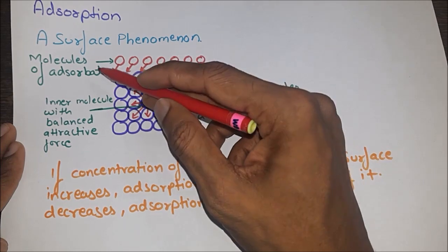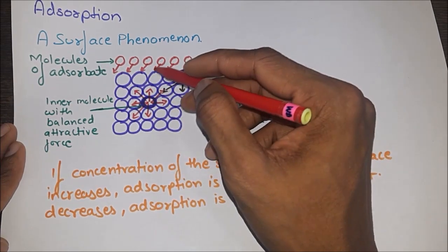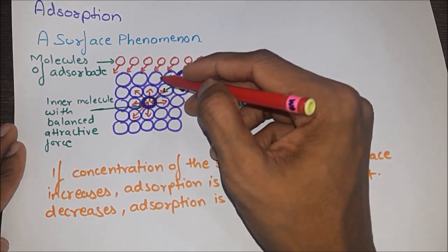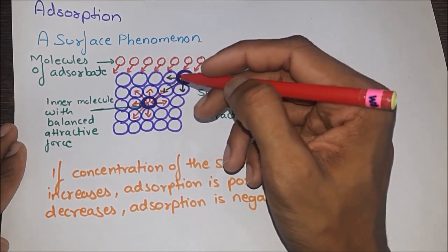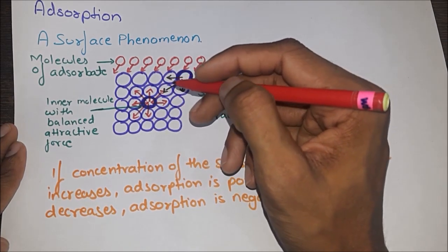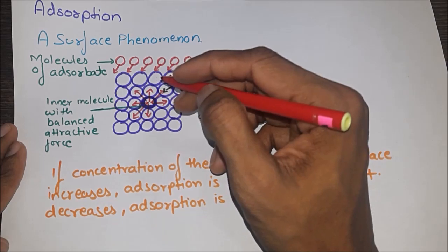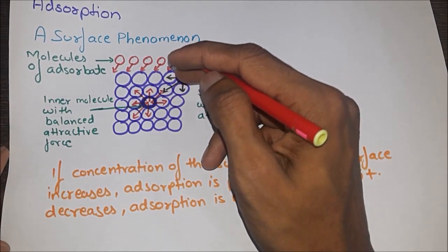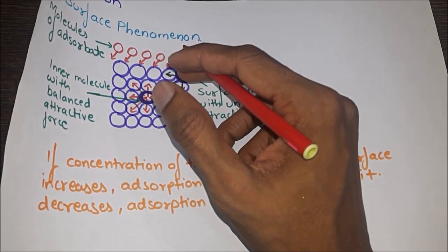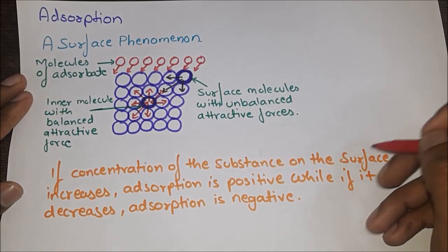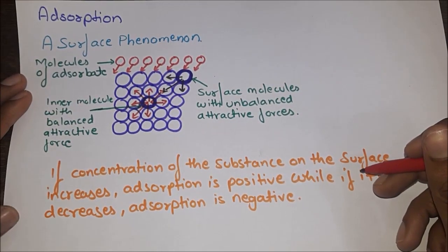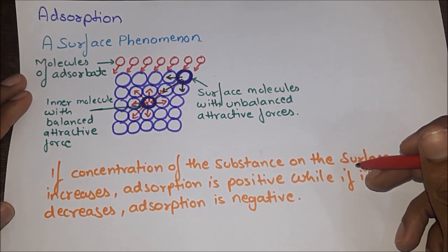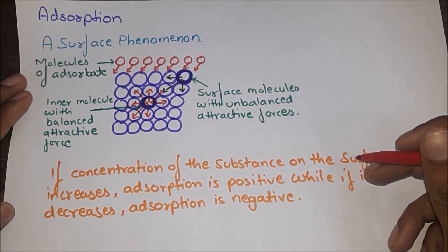Thus there is an accumulation of one substance on the surface of the other substance forming a higher concentration layer. The molecule of adsorbate bonds with the molecule on the surface — this phenomenon is adsorption. Hence adsorption is a surface phenomenon. Note that if concentration of the substance on the surface increases, adsorption is positive; if it decreases, adsorption is negative.